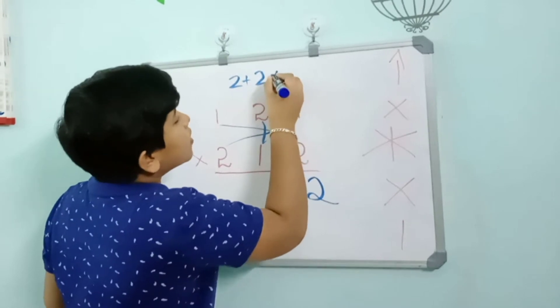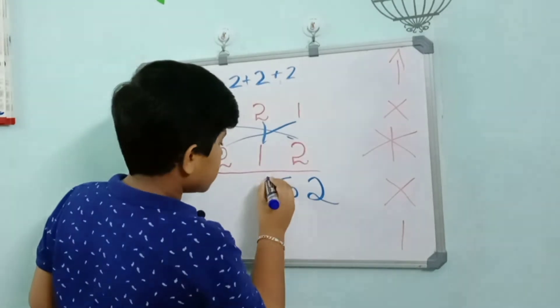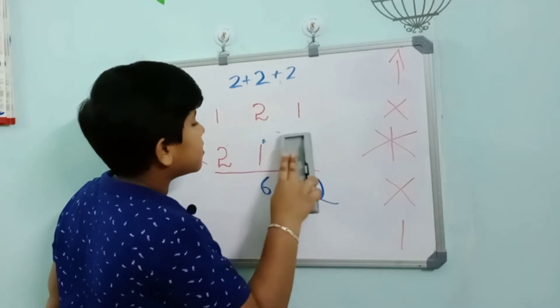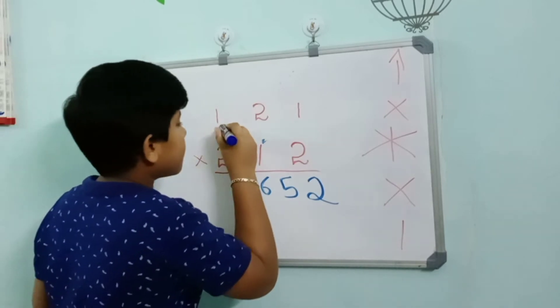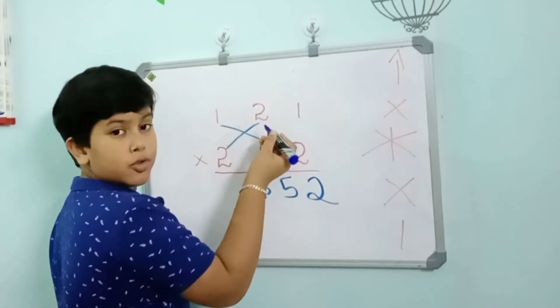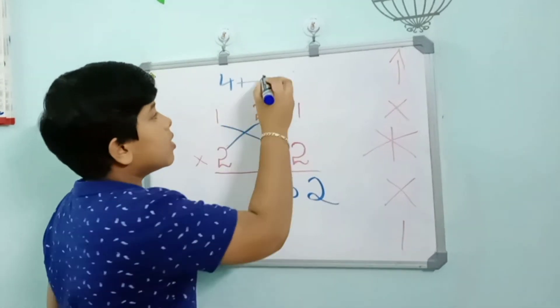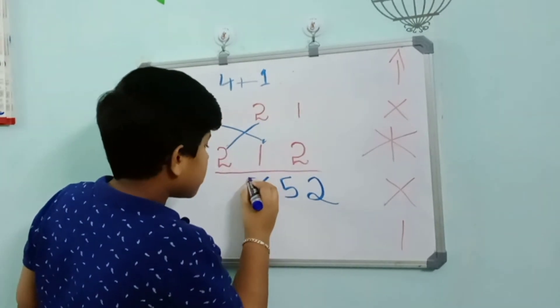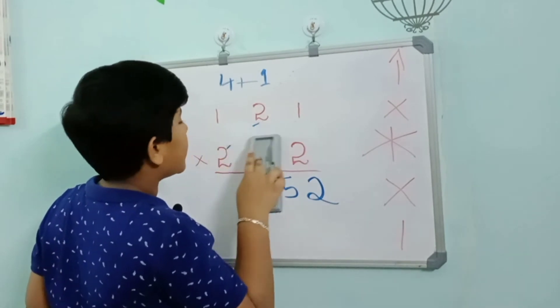The next one is crosswords: 2 into 2 equals 4, plus 1 into 1 equals 1, so 4 plus 1 equals 5. The last and final one is upwards.